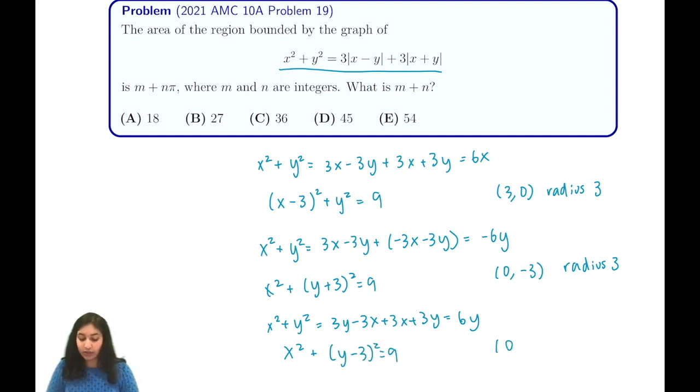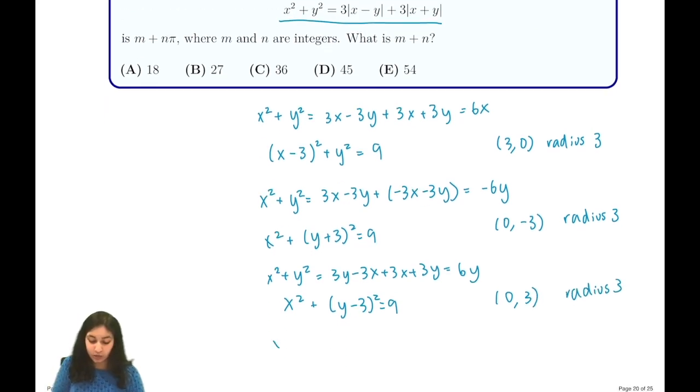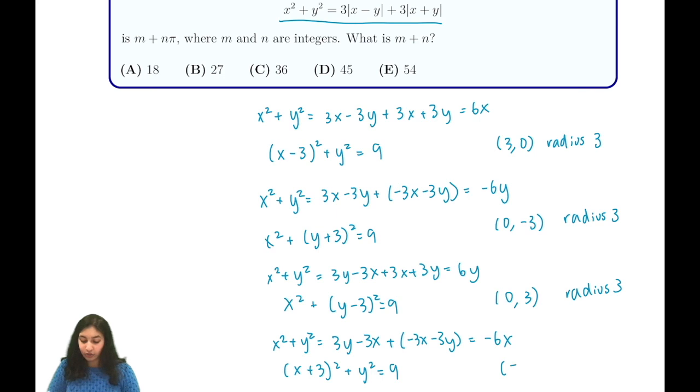Our last equation is x² + y² = 3y - 3x + (-3x - 3y), which is equivalent to -6x. This gives us an equation of (x + 3)² + y² = 9. This is a circle of center (-3, 0) and radius 3.